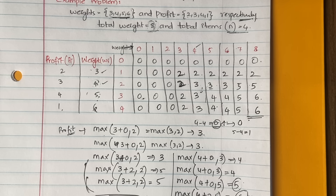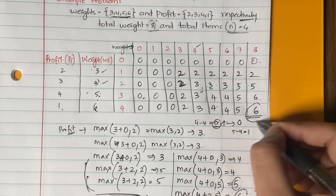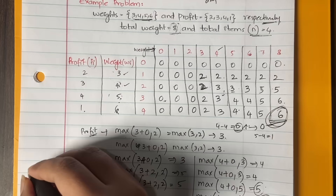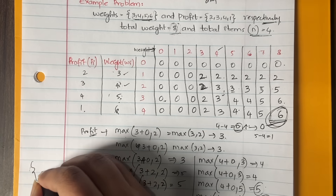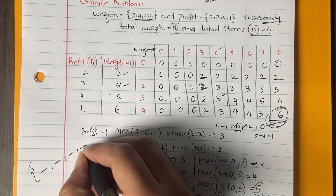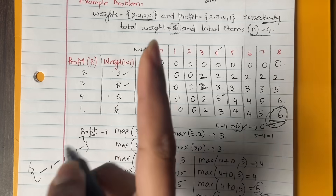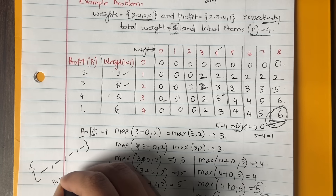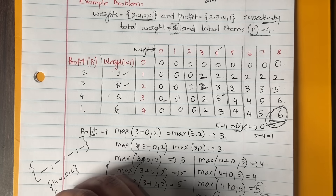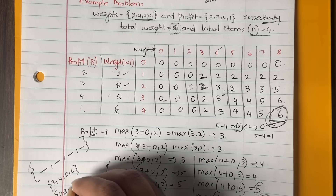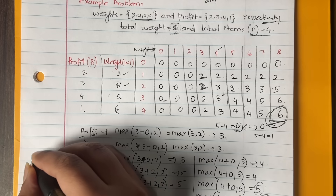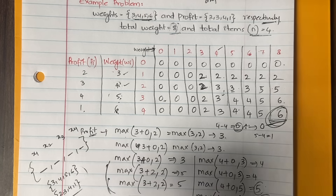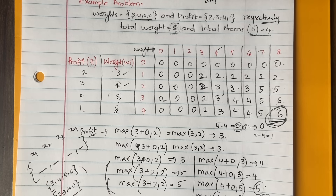The maximum profit is the last value in the table: 6. Now determine which items to pick. Start the pointer at 6 in the last row. Move the pointer upward — the value above is also 6, meaning the profit didn't change at row 4. So item 4 (weight 6) was not selected. We consider item 3.